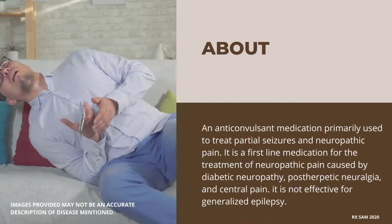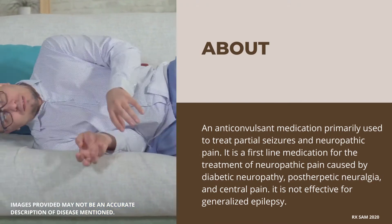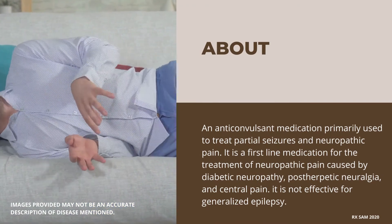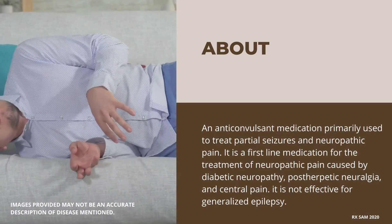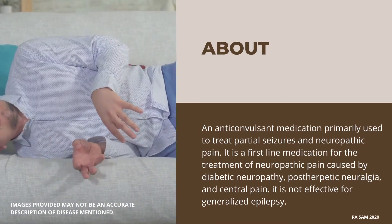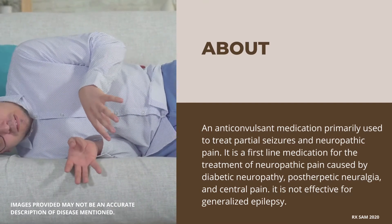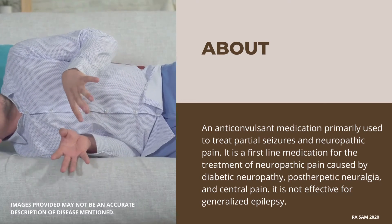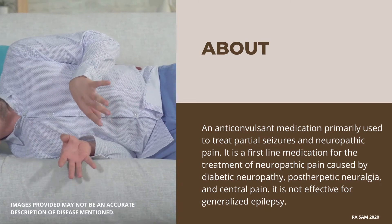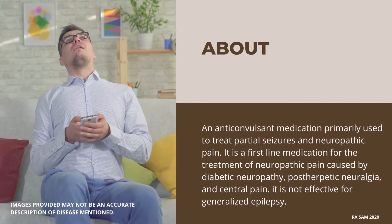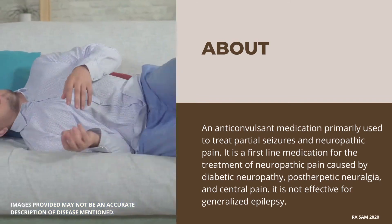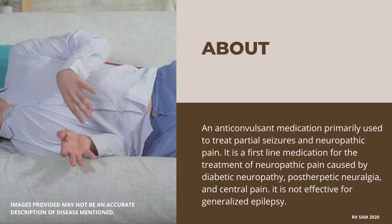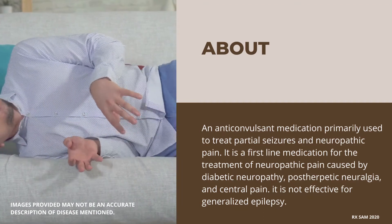Gabapentin is an anti-convulsant medication primarily used to treat partial seizures and neuropathic pain. It is a first-line medication for the treatment of neuropathic pain caused by diabetic neuropathy, post-herpetic neuralgia, and central pain. It is not effective for generalized epilepsy.